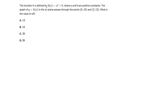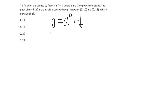Next question. The function h is defined by h of x equals a to the power of x plus b, where a and b are positive constants. The graph of y equals h of x passes through the points (0, 10) and (2, 13). What is the value of a times b? We'll plug in both points to find a and b. Plugging in (0, 10): 10 equals a to the power of 0 plus b. Since anything to the power of 0 is 1, we get 10 equals 1 plus b, so b equals 9.